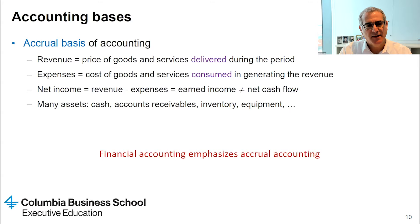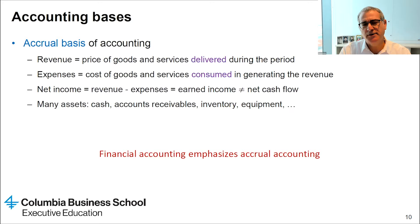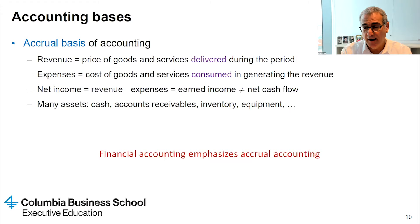Net income is measured as the difference between revenue and expenses, and this can be very different from the net cash flow during the period. For example, accounts receivable means we delivered to the customer and recognized revenue, but the customer has not yet paid — we have the right to collect cash, so we record it as an asset. Under accrual accounting there are many more assets to account for. Companies are generally required to follow accrual accounting when they prepare financial statements.